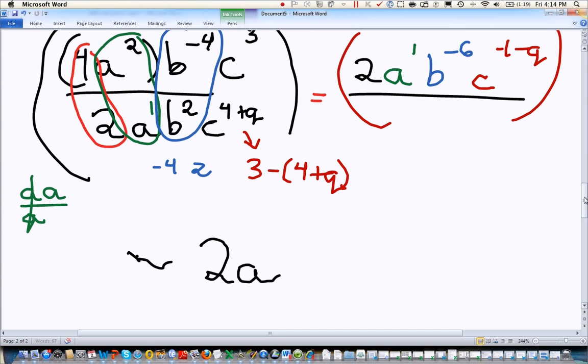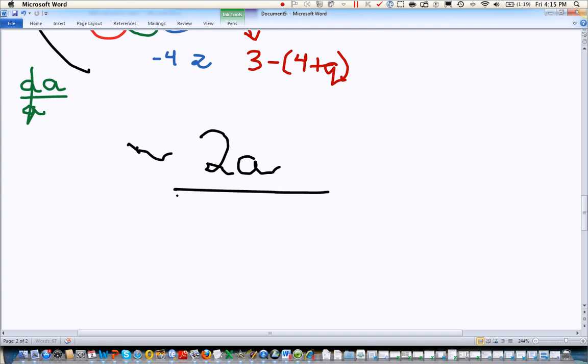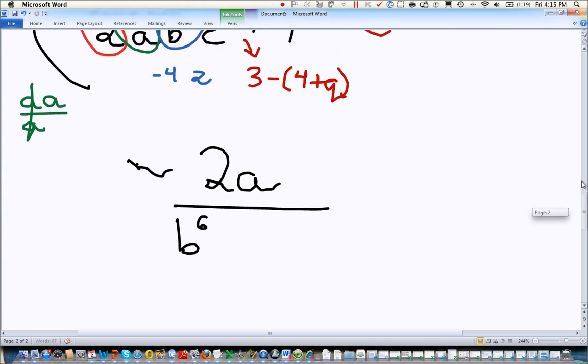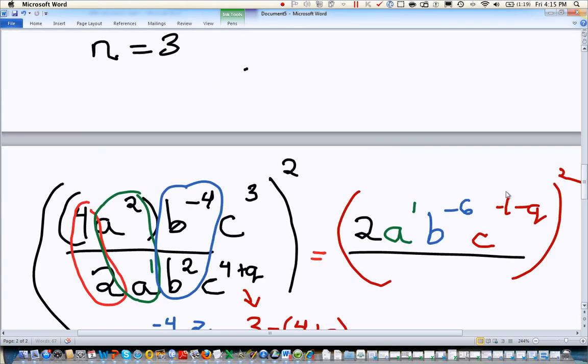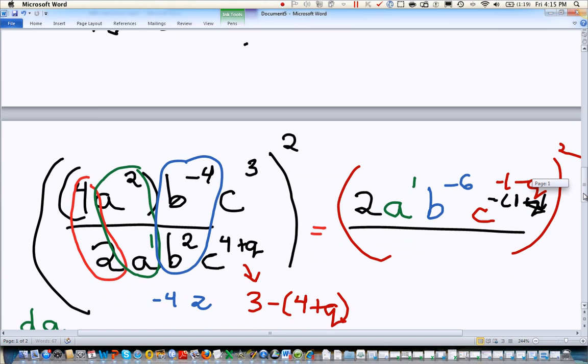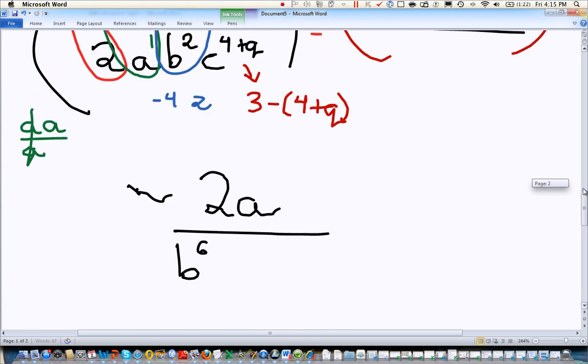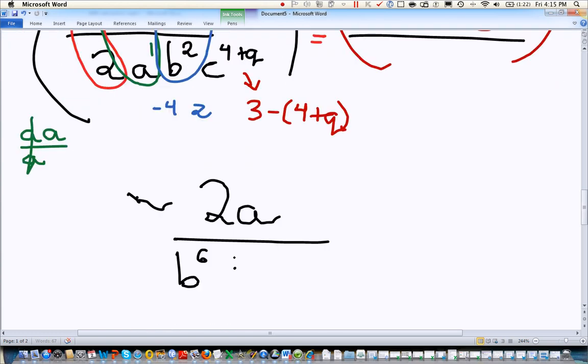On the bottom, I'm going to move down my b to the 6th. And I'm actually going to move down my c to the 1 plus Q. Because negative 1 minus Q is really negative 1 plus Q turned into a negative. So you've got to be real careful to look at what's negative and what's not. If the whole exponent is negative, you can move it down to the bottom. And that gets rid of the negative. If the whole exponent is not negative, you're going to keep it on top.